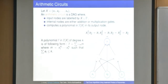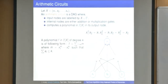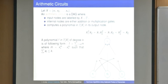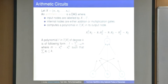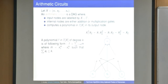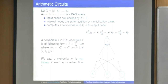In general, a polynomial is just a sum of monomials where with each monomial some coefficient from the underlying field is associated. A monomial is of the form x₁^e₁ · x₂^e₂ · … · xₙ^eₙ. If it is degree k, all the sum of eᵢ is bounded by k, and we say that the monomial is multilinear if each eᵢ is either 0 or 1.